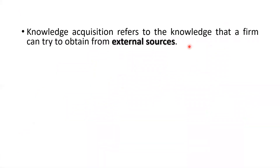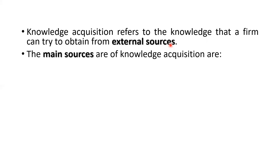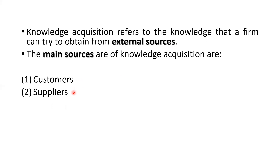When we talk about knowledge acquisition, knowledge can be acquired by the firm mainly from external sources. We are going to study all those external sources which could help an organization gain knowledge. Let us first have a look at all the main sources of knowledge acquisition. The first and foremost source could be customers, who are an important source of acquiring knowledge for the organization. Second could be suppliers — those who supply goods, raw materials, or data to the organization.